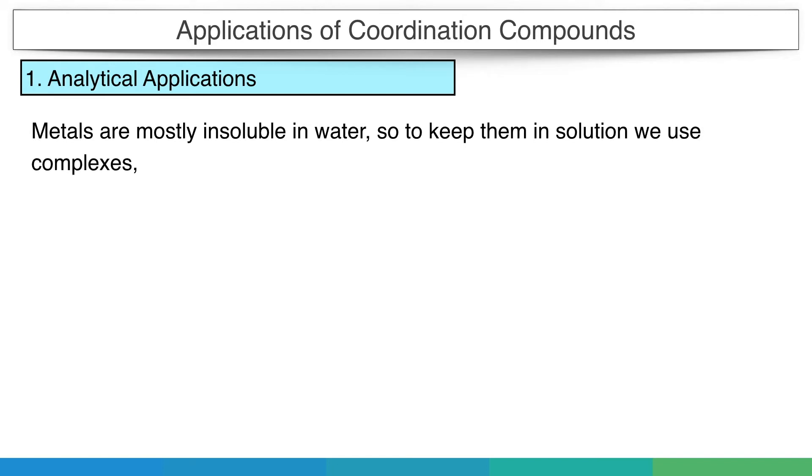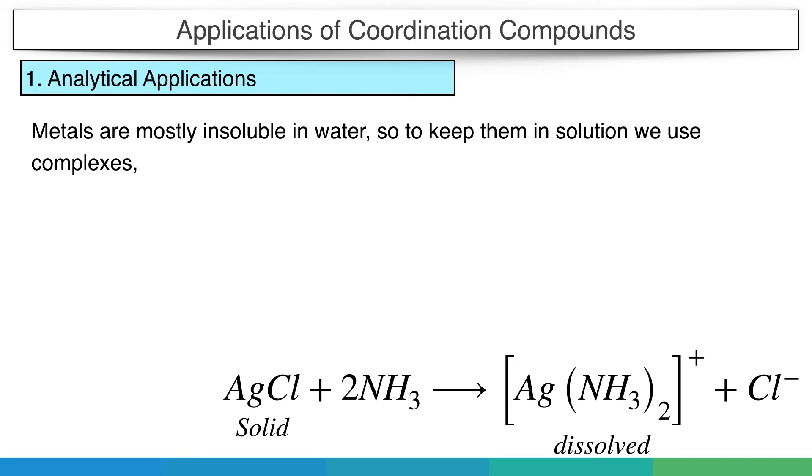For example, silver chloride, which is an insoluble solid, when treated with ammonia solution, forms a complex ion which is in dissolved state.